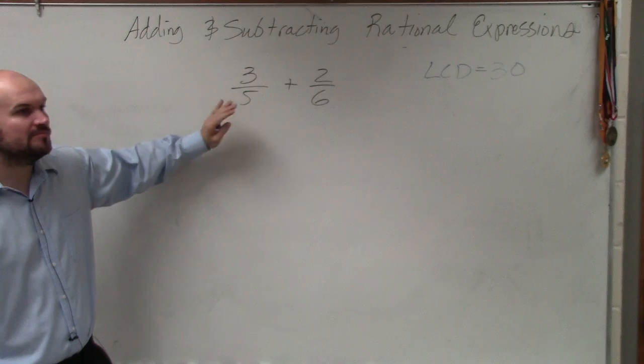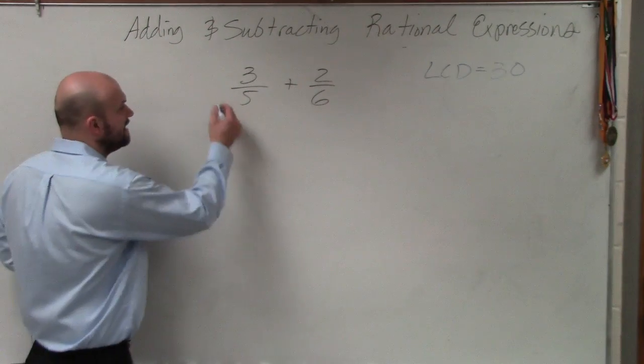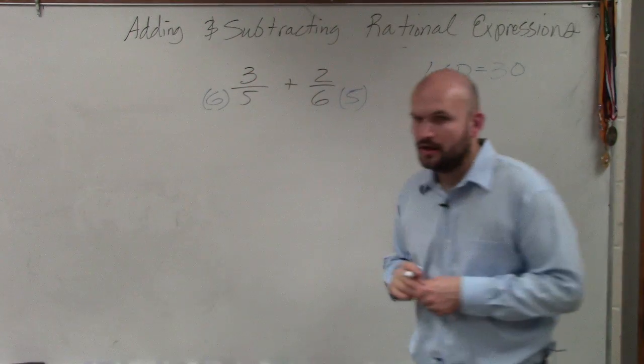What we want to do is be able to multiply our denominators so they're both going to be 30. So on the left side, I'm going to have to multiply by 6. On the right side, I'm going to have to multiply by 5.